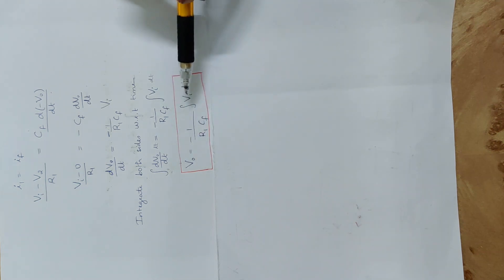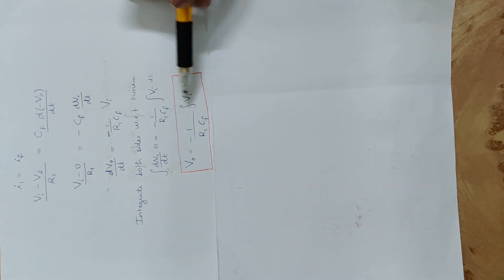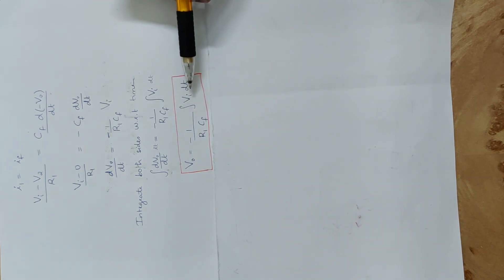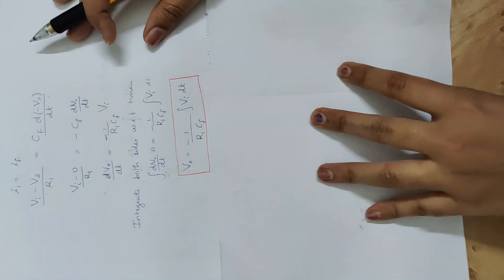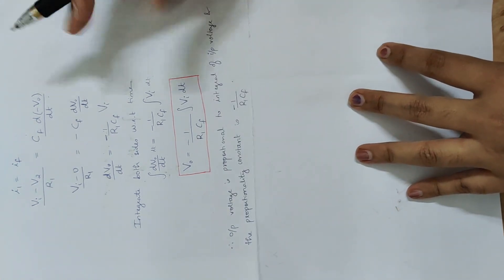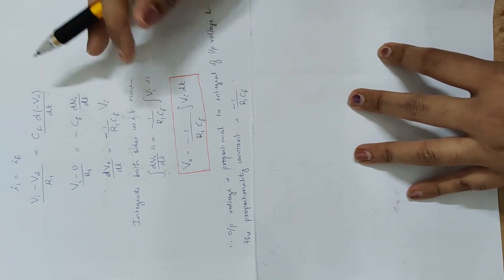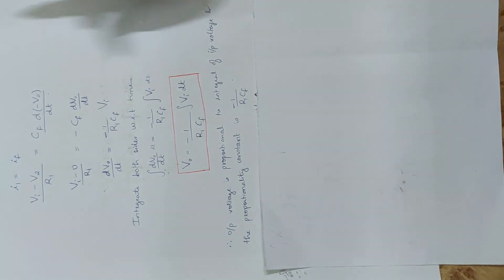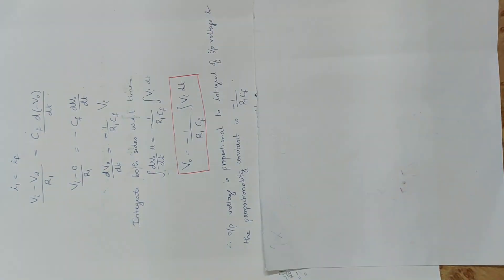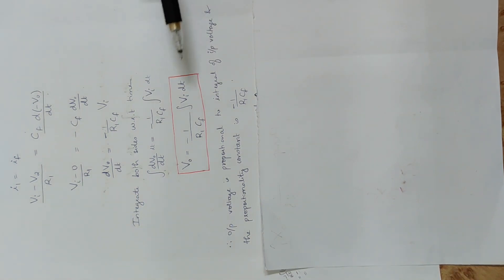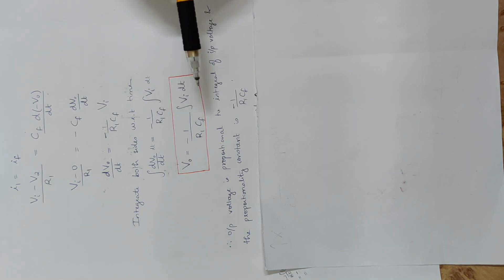The output voltage is proportional to the integral of the input voltage. The constant of proportionality is minus 1 divided by R1 into CF. So the integrator equation is: VO equals minus 1 by R1 into CF, multiplied by the integral of Vi dt.